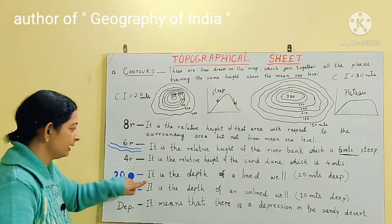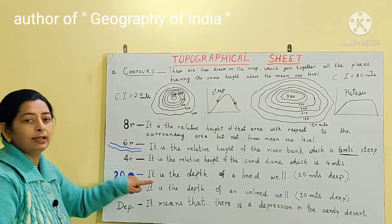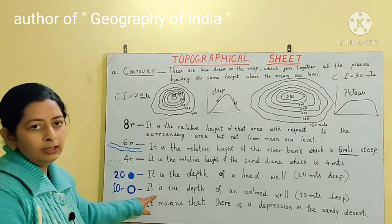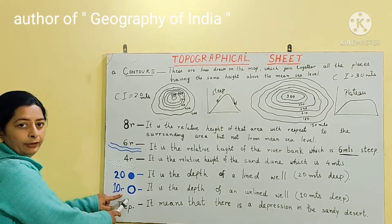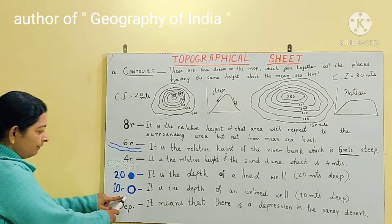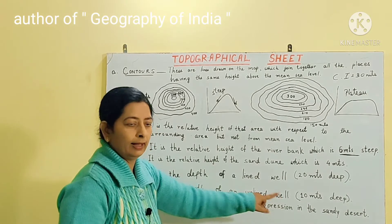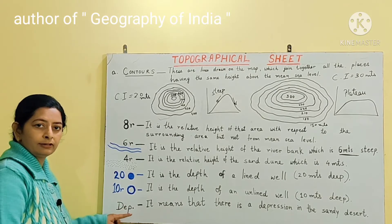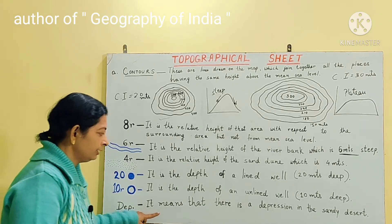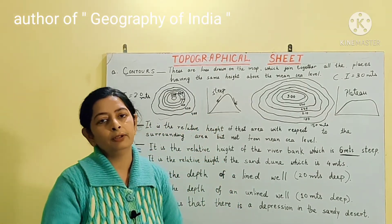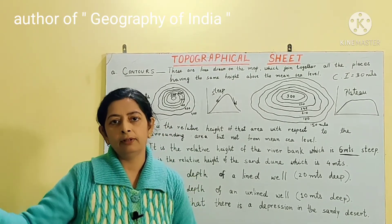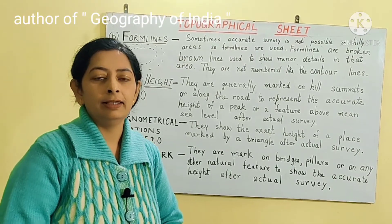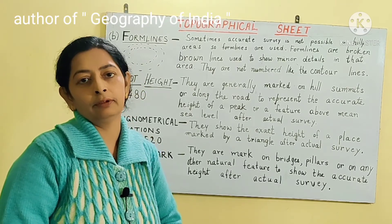Always mention the measurement along with the unit. A blue circle represents an unlined well; '10r' written beside it means the unlined well is 10 meters deep. In a sandy area, 'dep' written with a dot is the short form of depression, indicating there is a depression in the sandy area. Sandy areas are undulating, so they may have depressions or small hills.